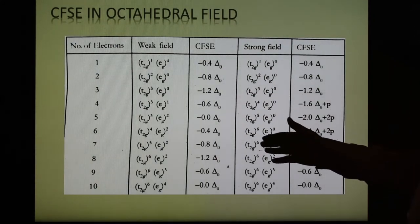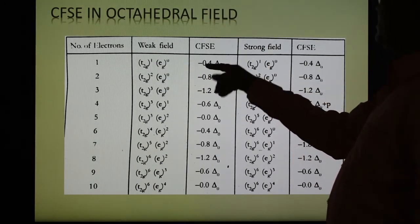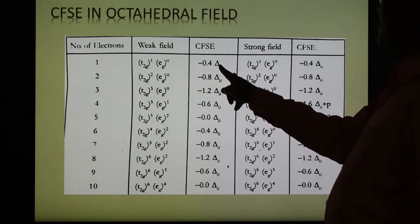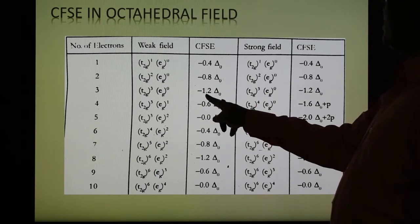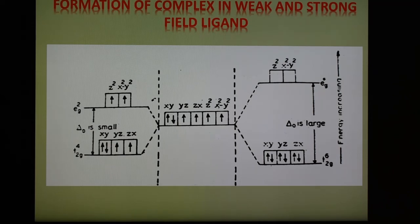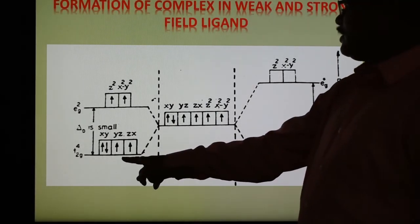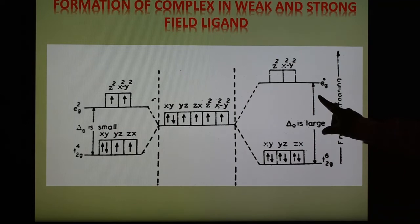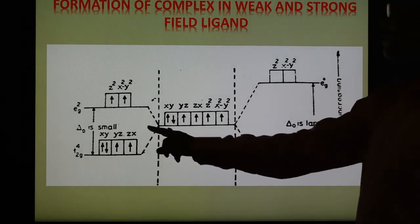The lower t2g set value for each electron is -0.4 delta o and the upper eg set value is +0.6 delta o. For weak field and strong field, for d1 there is only one spin state: t2g¹ eg⁰. For one electron, the value is -0.4 delta o; for two electrons, -0.8 delta o; for three electrons, -1.2 delta o. It is possible to determine the CFSE values in octahedral field for each configuration. In case of strong field, delta o is large giving a low spin state; in case of weak field, delta o is small giving a high spin state.